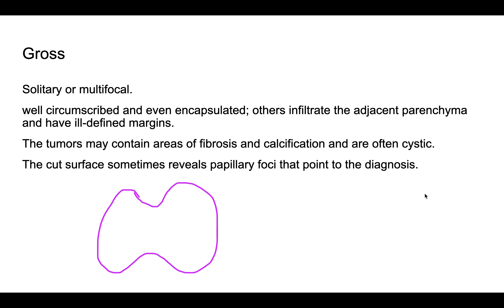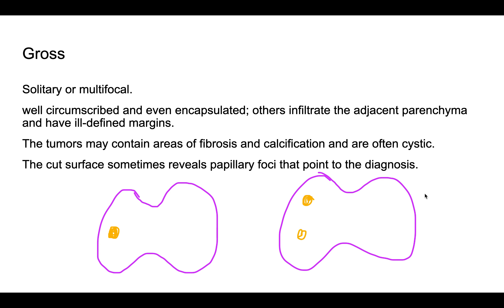The gross morphology of papillary carcinoma can present as a solitary tumor or as a multifocal tumor within the thyroid gland. It can be very well circumscribed and encapsulated, or it can have infiltrative margins. The tumor can also show areas of fibrosis, calcification, and can be cystic.